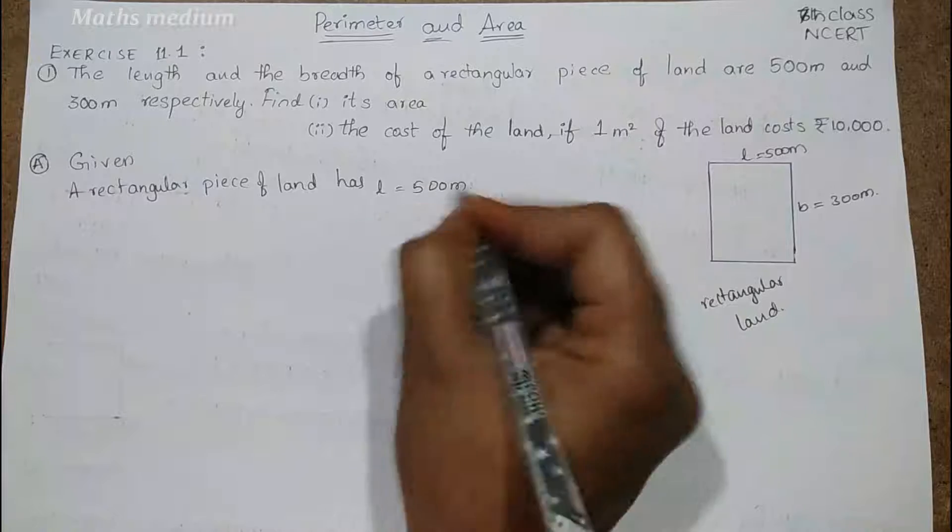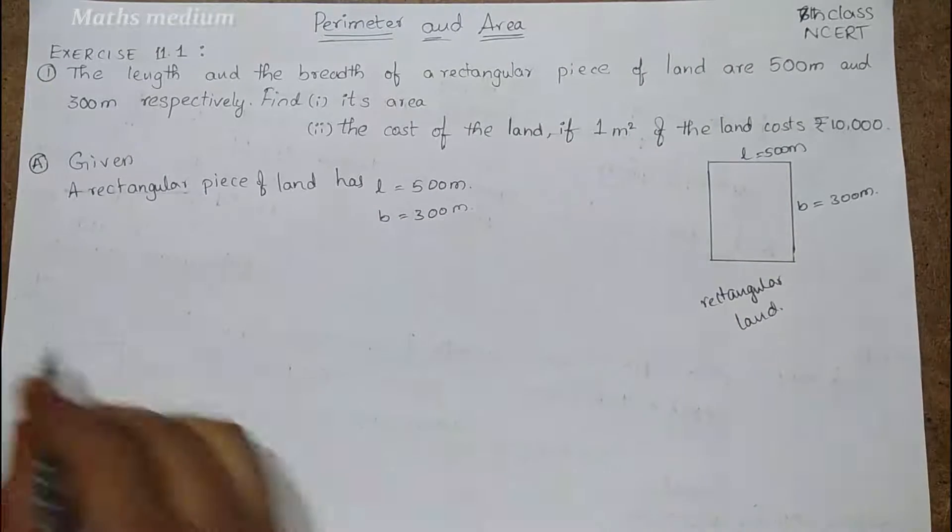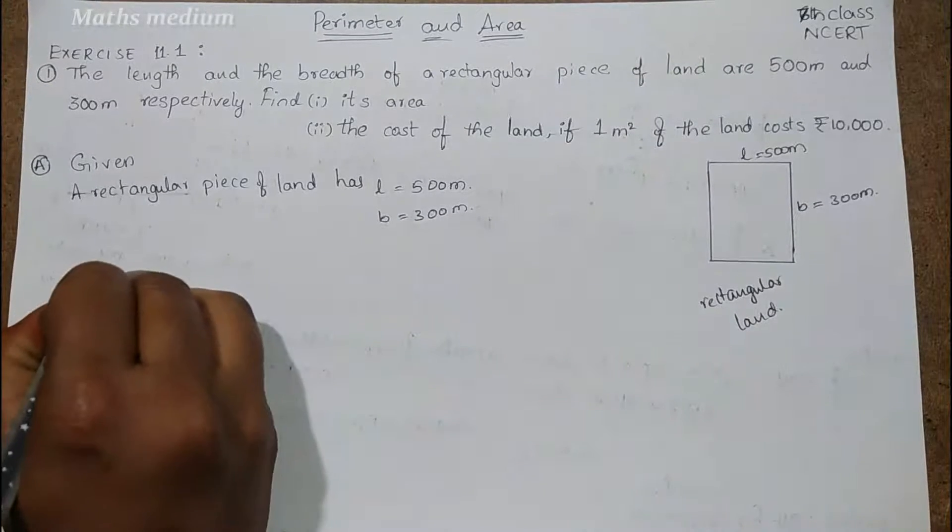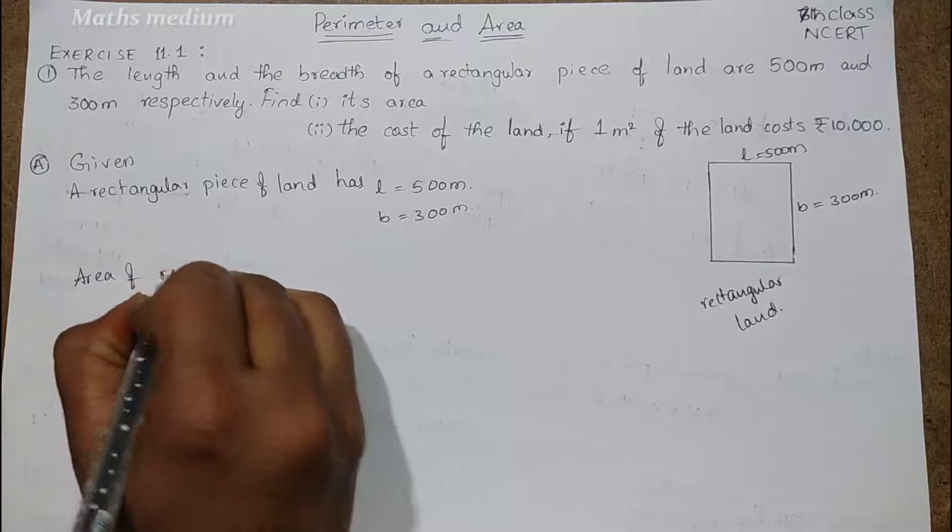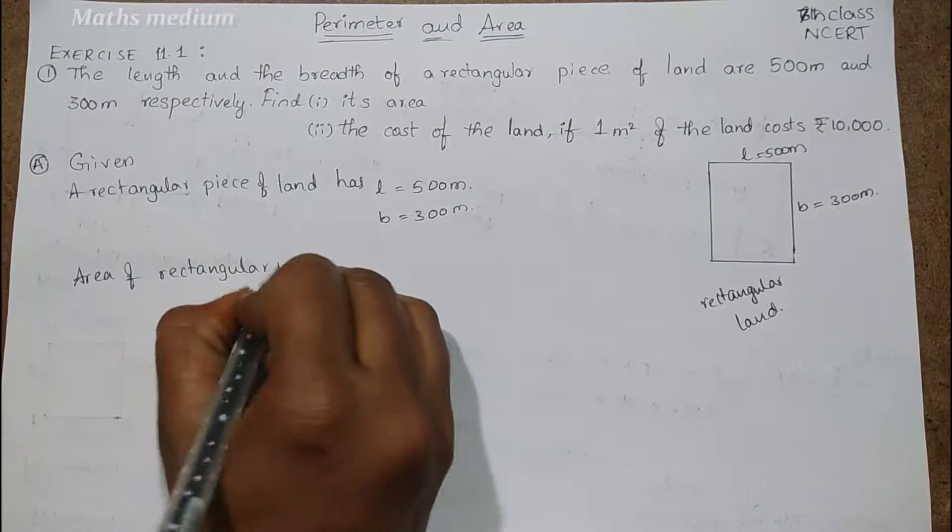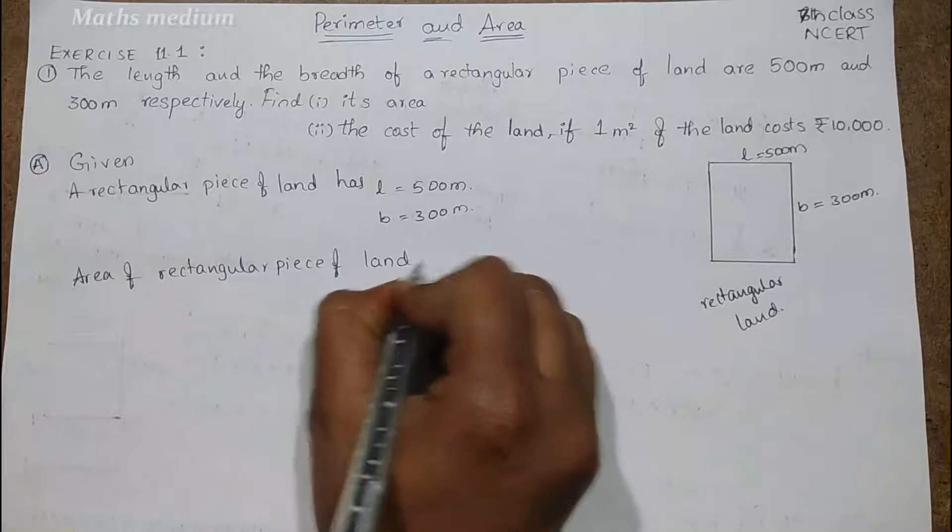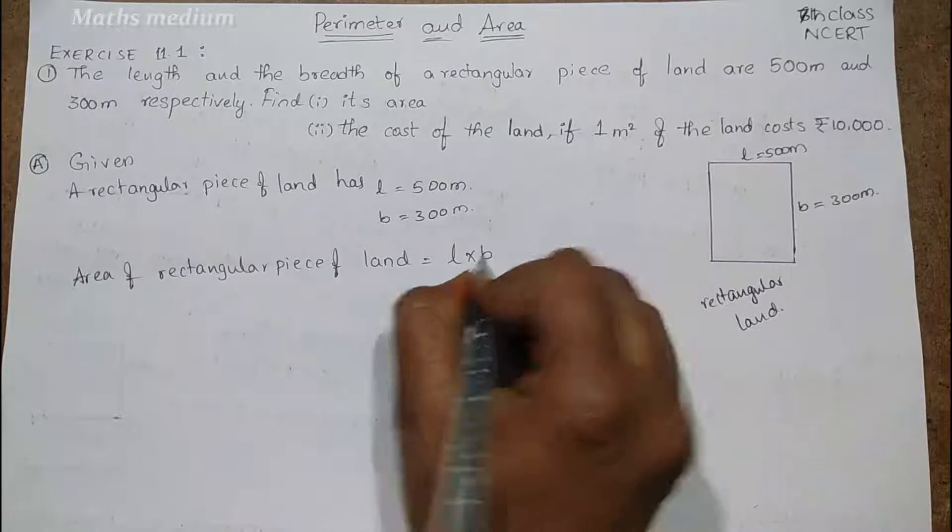Now, area of rectangular piece of land. Area of rectangular piece of land is equal to L into B, which means length into breadth.